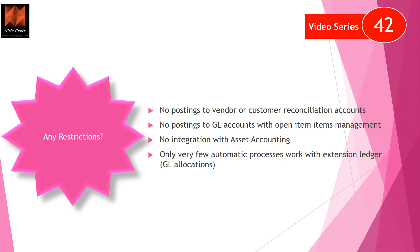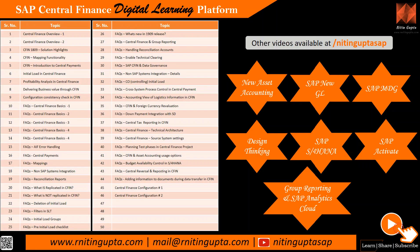That is the purpose of the extension ledger. To summarize: you have one standard ledger and one extension ledger. The extension ledger is a combination of standard data plus any delta postings. When you run a report for the standard ledger you do standard reporting, but for management reporting you pull all your standard data plus any delta postings using the extension ledger. No standard business operational transactions can be posted to the extension ledger, and the reduced data footprint is important — you are not storing data in two tables; the same data is accessed by different ledgers.